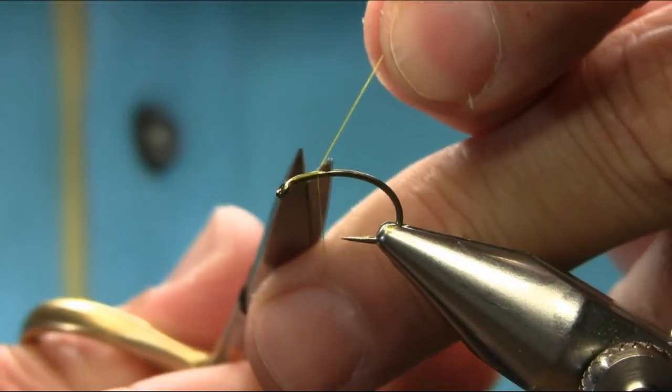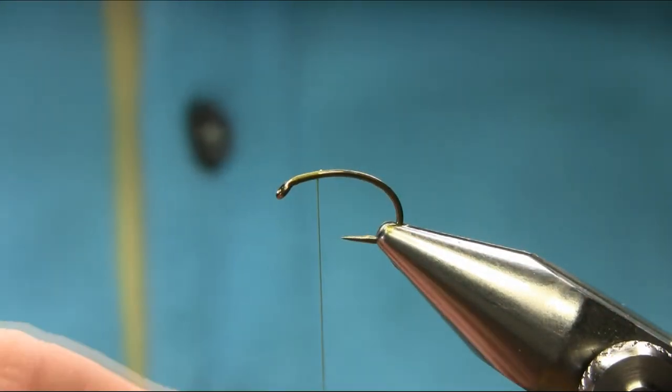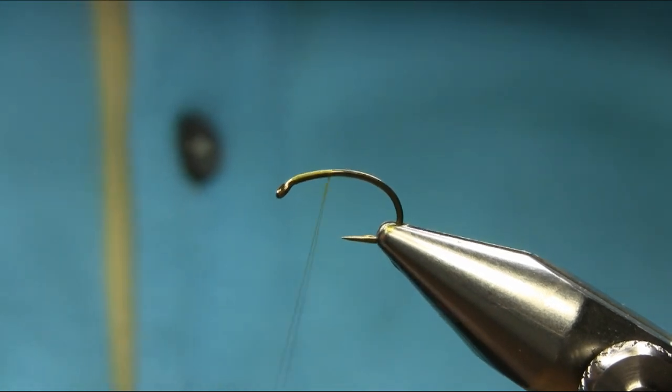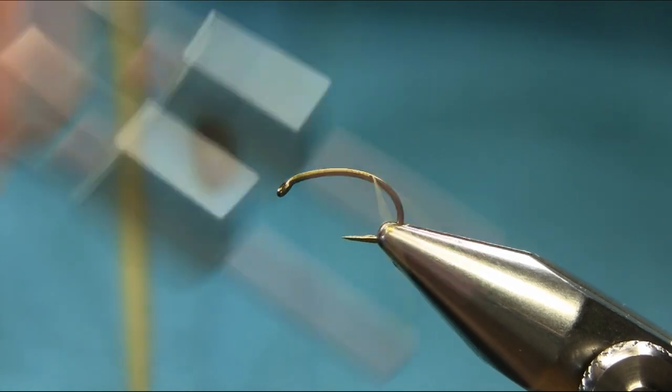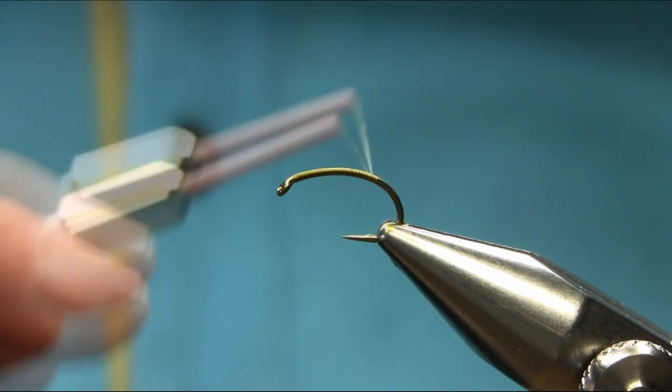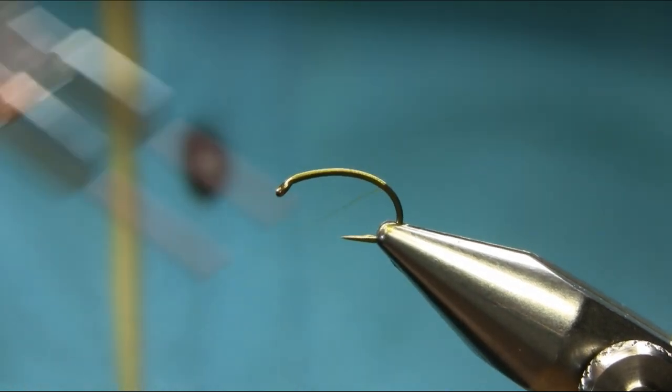I will explain all the materials. Keep going towards the bend using touch and turn. Spin the bobbin to unwind the thread so it becomes flat so it can sit nicely on the hook.